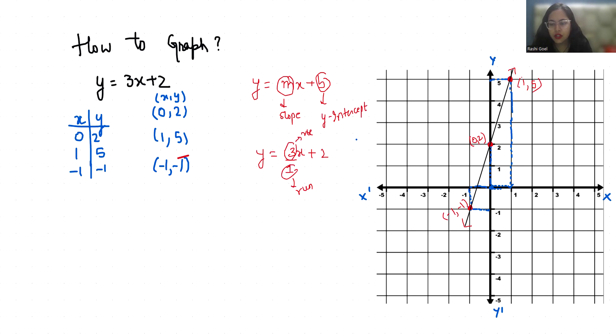So it will start here. So minus 1 is 1, 2, 3 - 3 rise, 1 run. Now again, 1, 2, 3 - 3 rise and 1 run.